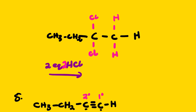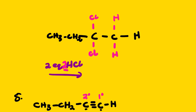Remember: two equivalents simply means two hydrogens and two chlorines added in total — so we end up with two chlorines and two hydrogens. I hope you understand this reaction. That's it for this lesson. This is Wahoula SJ — thank you very much.